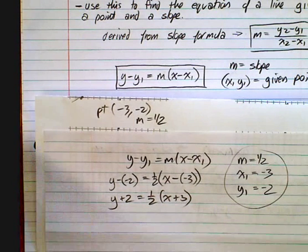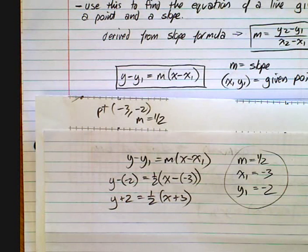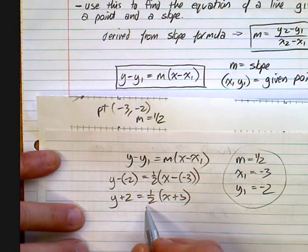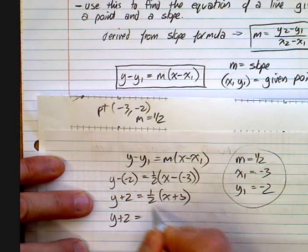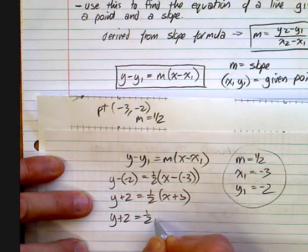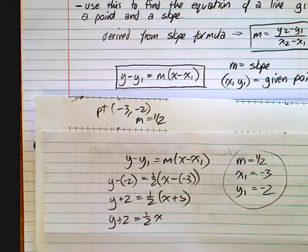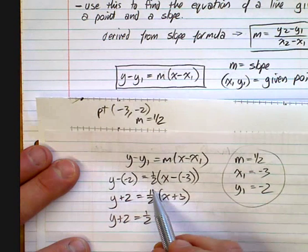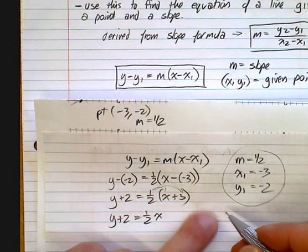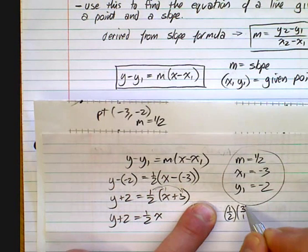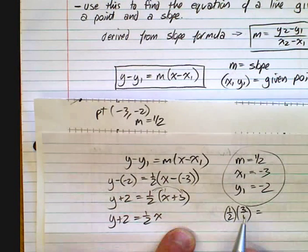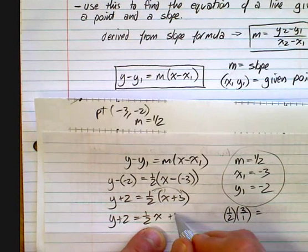This is where the algebra comes into play. You need to be able to rearrange this, which means multiplying it out. That's one half times x, and then one half times 3 as well. If you can't see that, you need to work on fractions. That's going to end up being 3 halves.